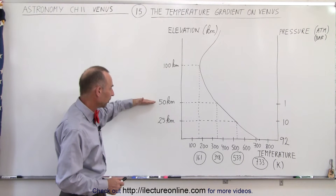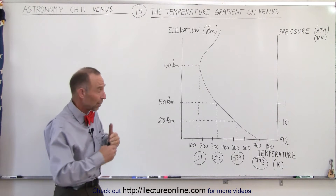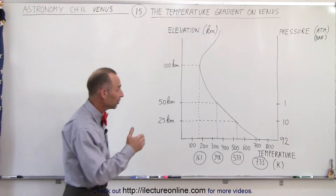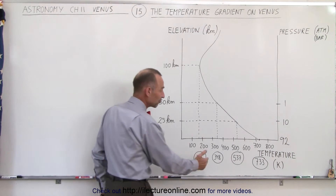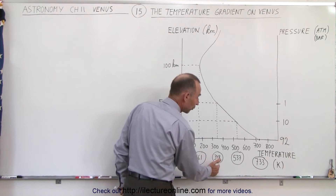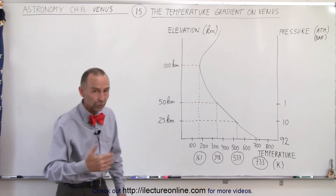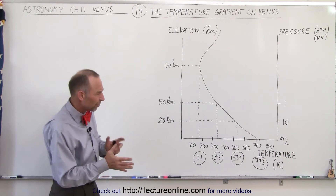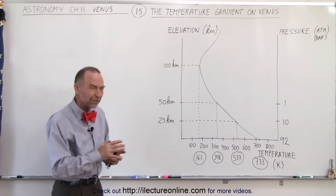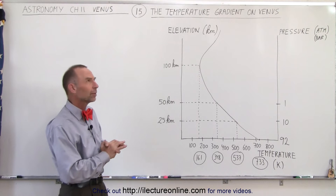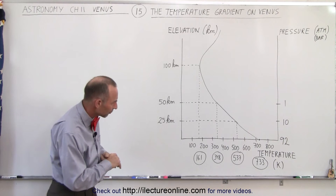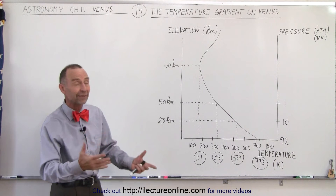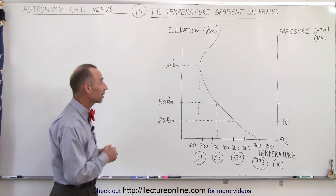When we double that, we go to 50 kilometers — now we're 30 miles up in the atmosphere. The temperature has now dropped to 348 Kelvin, which is about 71 degrees centigrade.